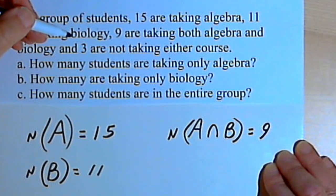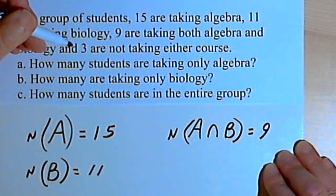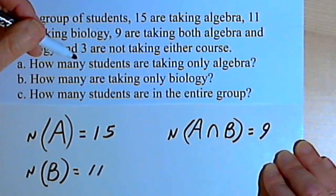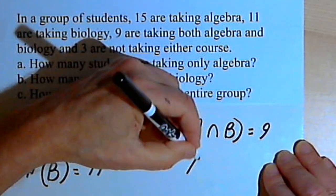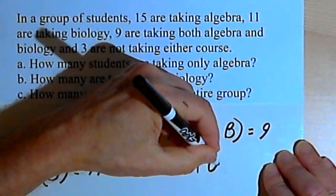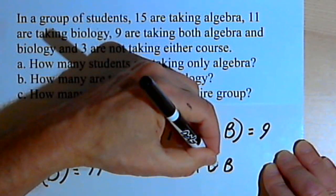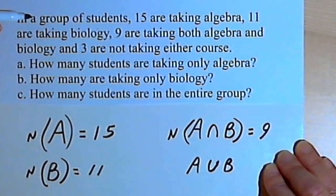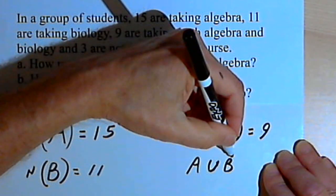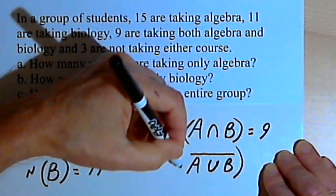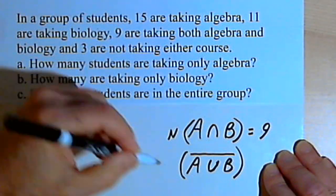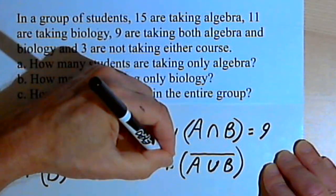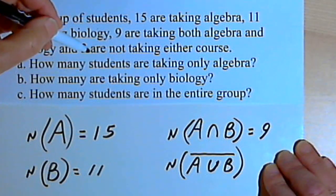And then there are students who are not in either algebra or biology. So if they were in algebra or biology, that would be a union. It would be the union of algebra and biology. But I know how many students are not in that union. So what I'm going to do is take the complement of the union, the complement of A union B. And the number of students there is 3.